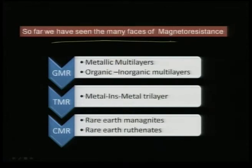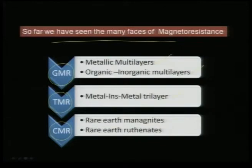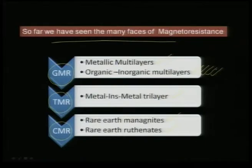So far we have seen the many phases of magnetoresistance — we call this GMR, we call this TMR, and we call this CMR. In GMR we are predominantly talking about metallic multilayers and organic-inorganic multilayers. In TMR we looked at metal-insulator-metal trilayers, and CMR predominantly covers rare earth manganates and ruthenates. Today I am going to spend a little more time on the issue of organic-inorganic multilayers and why that combination is advantageous.